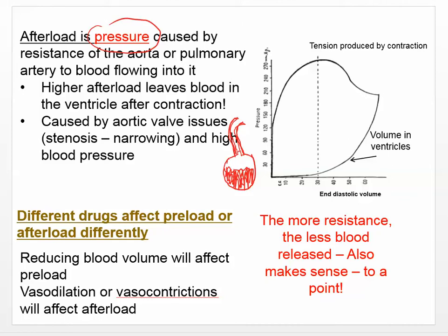If the aorta is perfectly wide open, you're going to have a lower afterload — less pressure required by the heart. But if the heart is constantly trying to push against clogged arteries, it has to work harder. That higher afterload is going to cause an increase in muscle tissue — you might have some hypertrophy of the ventricle. Afterload is pressure, so keep those separated. Higher afterload can be caused by aortic valve issues or high blood pressure.